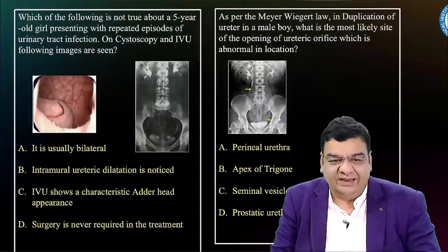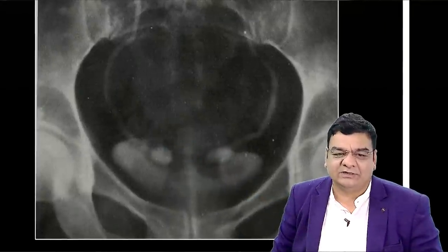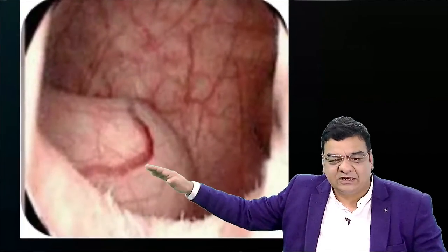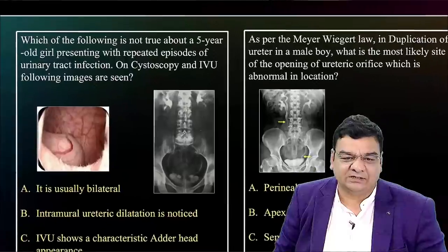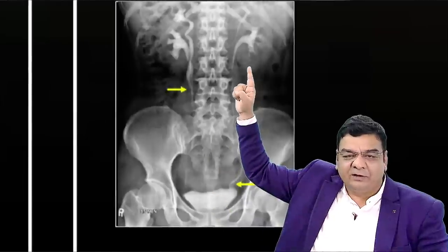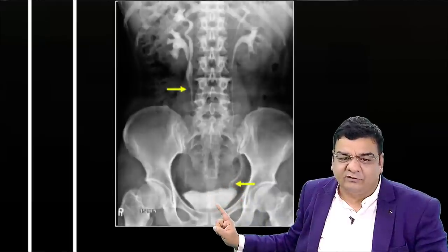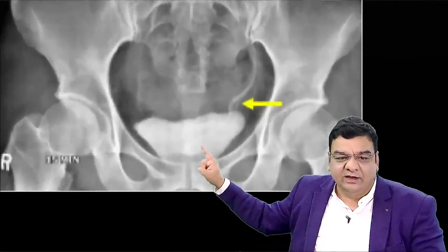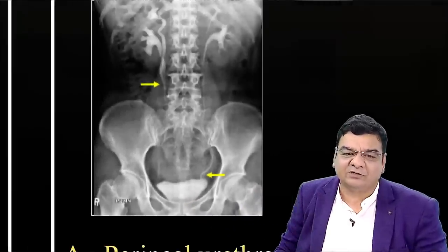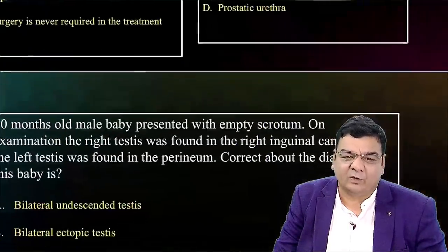Another important area is ureterocele — the cobra head or adder head appearance seen on imaging. Two 'laddoos' in the pelvis is a repeatedly asked hot question. There is also a cystoscopy image showing a bulge inside the bladder. Related questions include duplication of renal pelvis (drooping lily sign), hydatid cysts (water lily sign), and duplication of ureter where the ectopic ureter most often opens at the apex of trigone, though it can open in the prostatic urethra or seminal vesicle area.